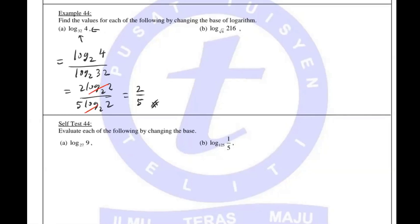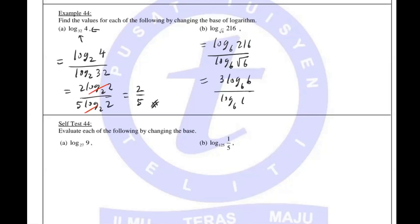The second one: I introduce base 6. I can see there's a root 6 and 6 involved — they're all numbers in base 6. I change to 6 with the power 3 brought in front. Square root 6 means 6 to the power half. When you cancel these two, you're left with 3 divided by half. And 3 divided by half is the same as 3 times 2, so the answer is 6.